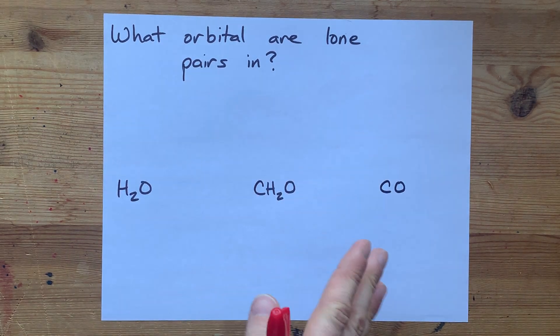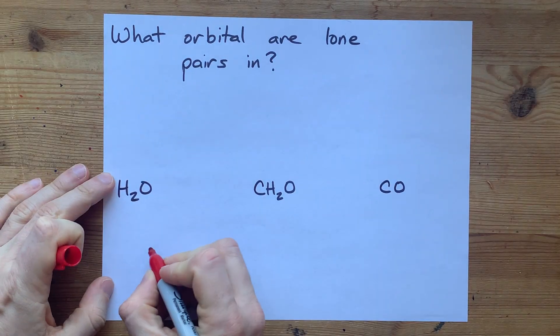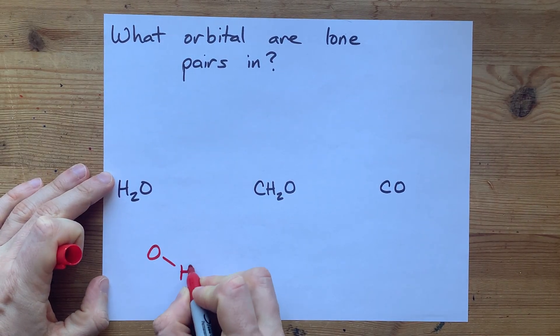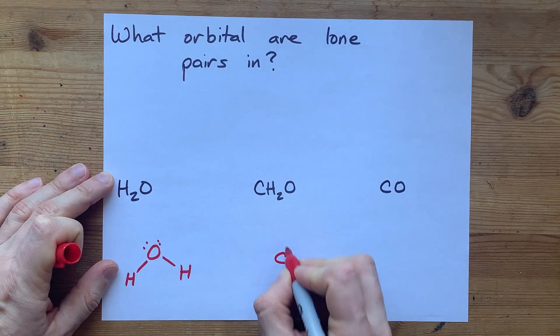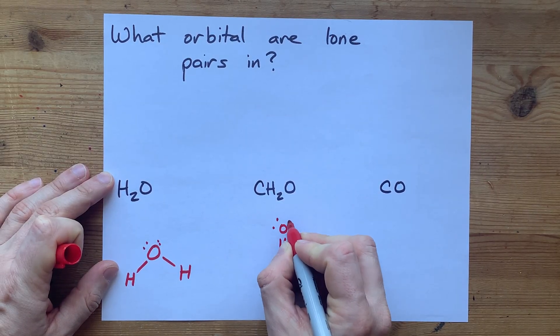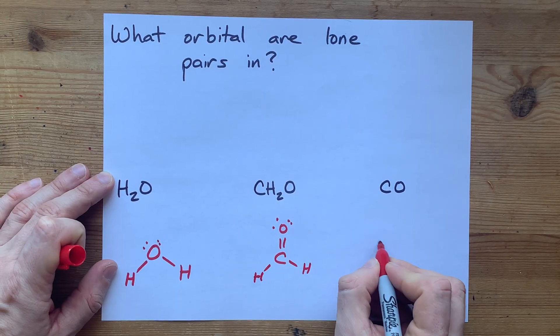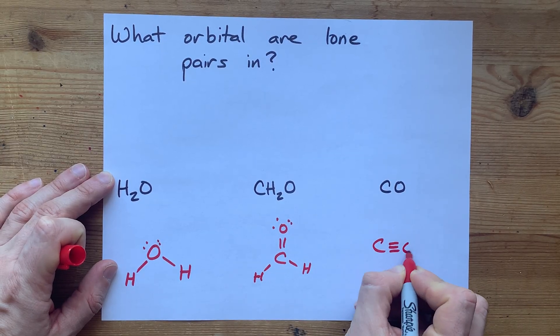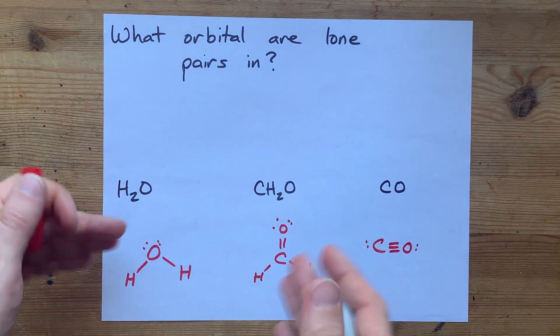I was asked the very generic question, what orbital are lone pairs in? The short answer here is that they are in hybridized orbitals. But you don't know what the orbital is going to be called until you draw the Lewis structure, figure out the hybridization of the molecule, and then whatever the hybridization is,